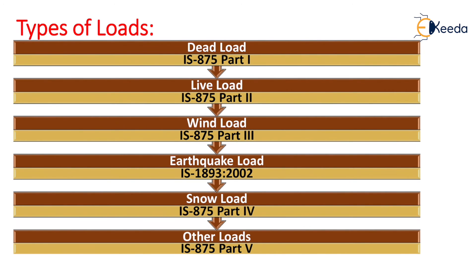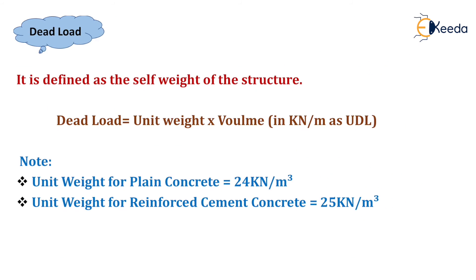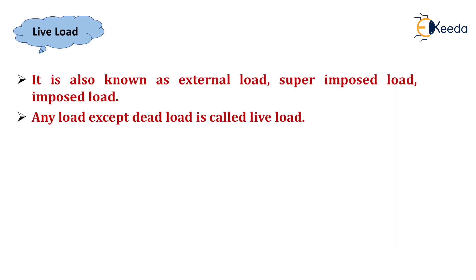Dead load is defined as the self-weight of the structure. It is calculated using the formula: load equals unit weight multiplied by volume, and it is expressed in kN/m as UDL. Note that the unit weight of plain concrete is taken as 24 kN/m³ and the unit weight of reinforced cement concrete is taken as 25 kN/m³.